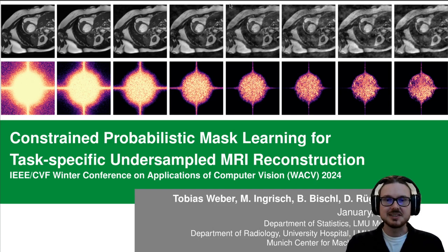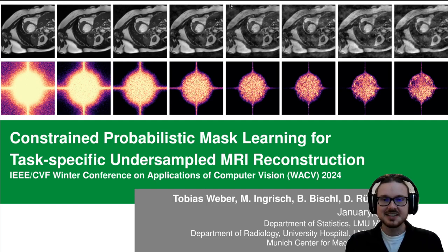Hi, I'm Tobias Weber and I welcome you to my presentation about our paper: Constraint Probabilistic Mask Learning for Task-Specific Undersampled MRI Reconstruction, together with my co-authors Michael Ingrisch, Bernd Bischel, and David Ruegamer. This work is a collaboration between the Department of Statistics and the Department of Radiology, both located at LMU in Munich, and also the Munich Center for Machine Learning.